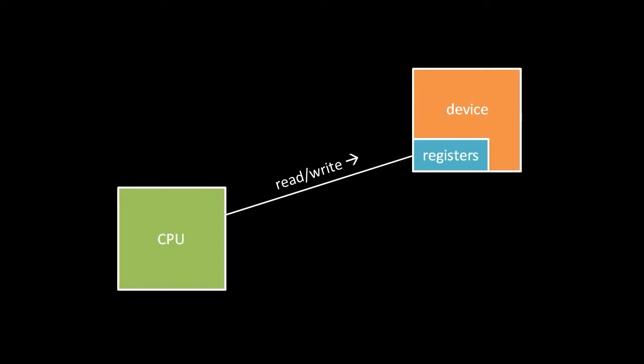For two electronic devices to communicate, there must be some common storage area which they can both read and write. When the CPU and an input-output device communicate, they do so by both reading and writing registers in the device. The relationship is one way: the CPU is in control, reading and writing registers of the device as it pleases, but the device cannot read and write the registers of the CPU. When a device wishes to send a message to the CPU, it writes to its own registers, with the expectation that the CPU will read the data at some point.